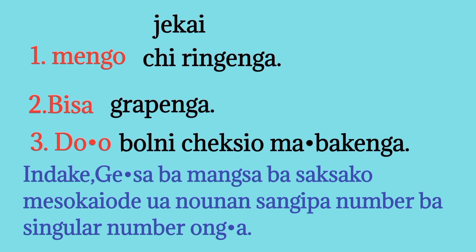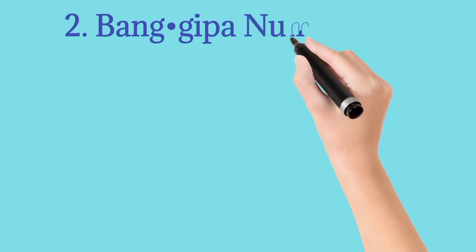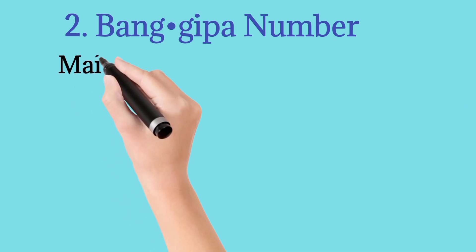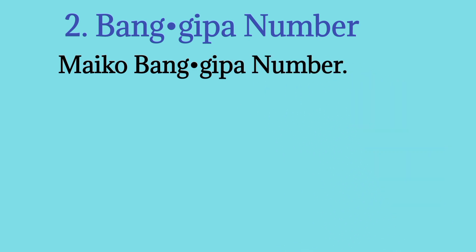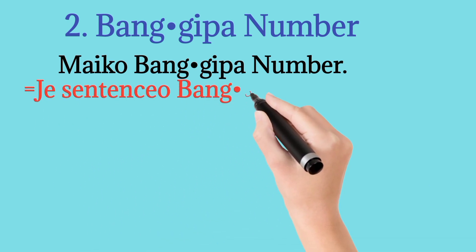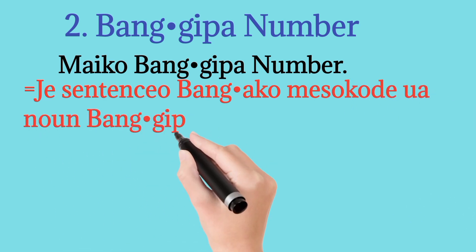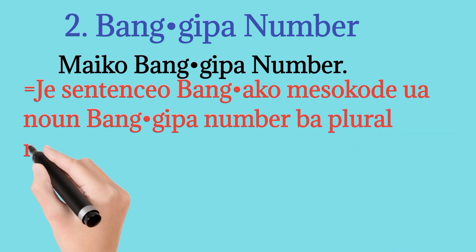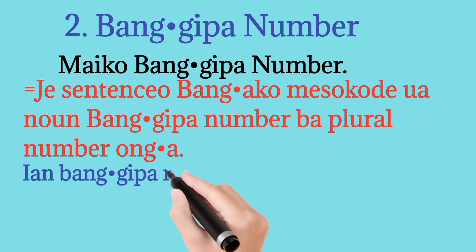Nambar unga. Andaki giksa ba mangsa ba saksako. Mesa kayo di mo wan naunan sangepa nambar ba singgular nambar mangana. Wan singgular nambar unga. Do o dan ceng yan genig pa ko niyang skana mo. Yan banggepa nambar, may naka ba ko banggepa nambar. Yan may ko banggepa nambar mga. The sentence to bang ako misoko di wan naun banggepa nambar ba plural number unga.